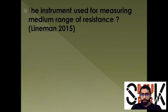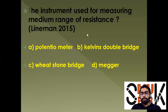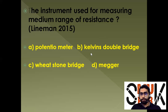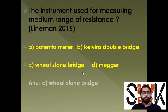The options are: potentiometer, Kelvin double bridge, and Wheatstone bridge. We discussed the classification of low, medium, and high resistance. Kelvin double bridge is for low range resistance. Wheatstone bridge covers medium range and high range. So the answer is Wheatstone bridge.